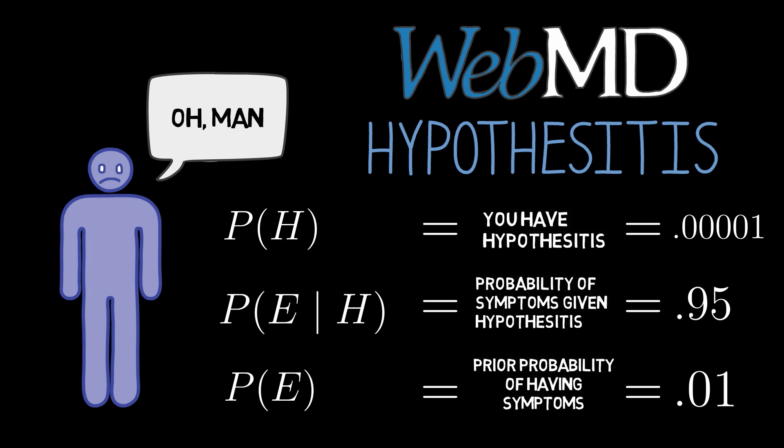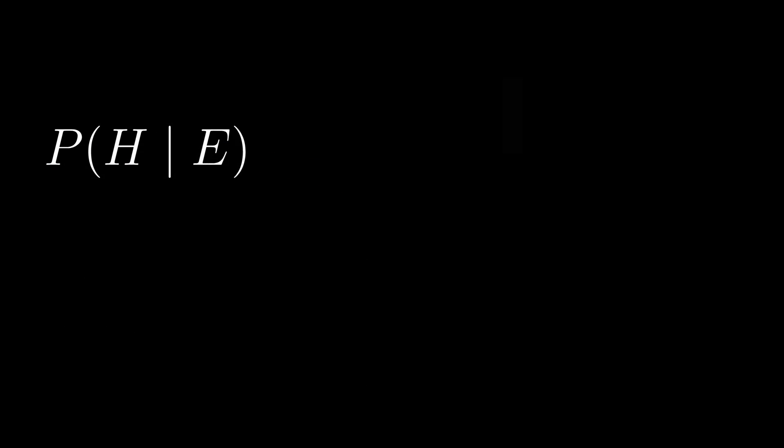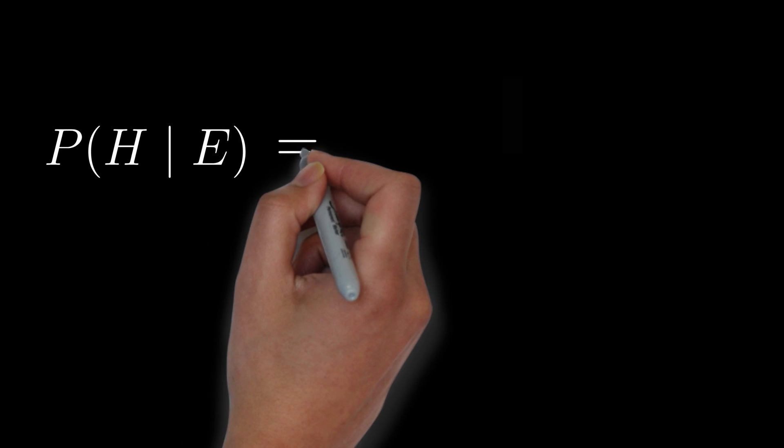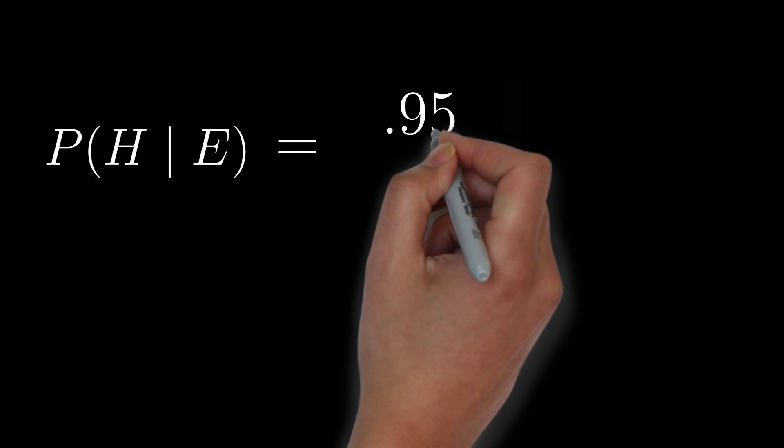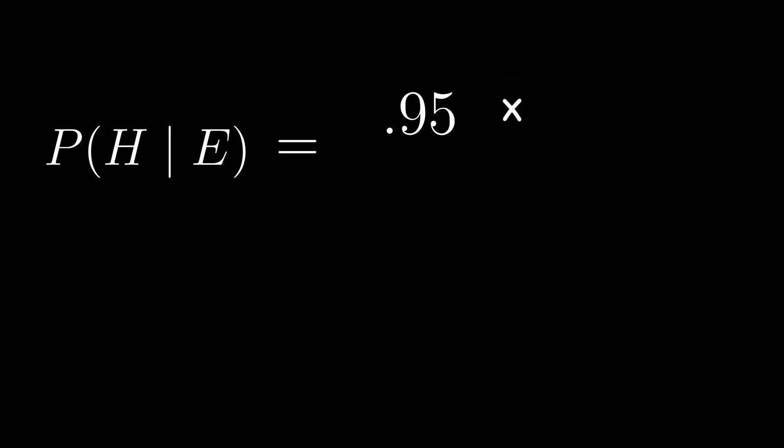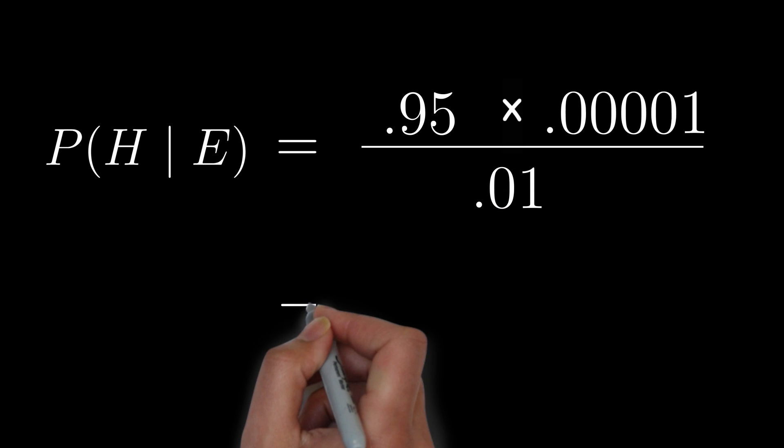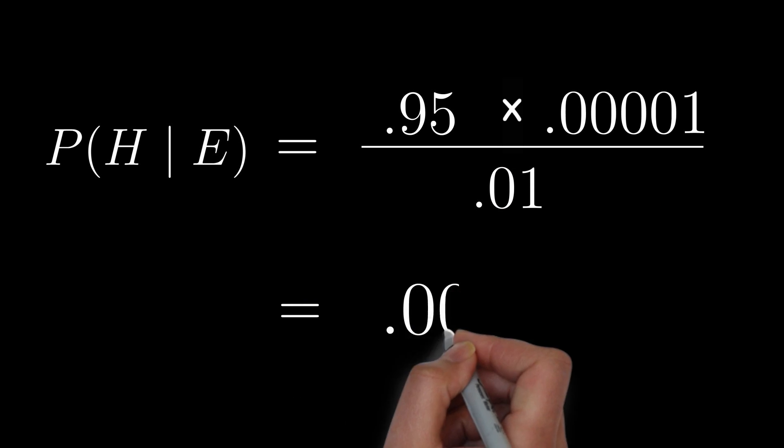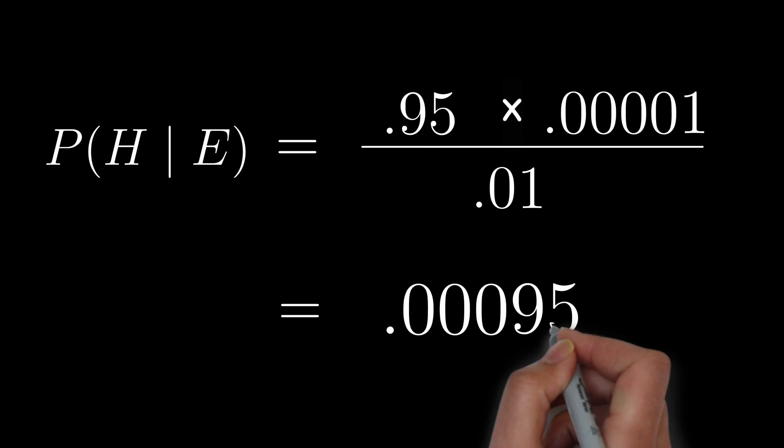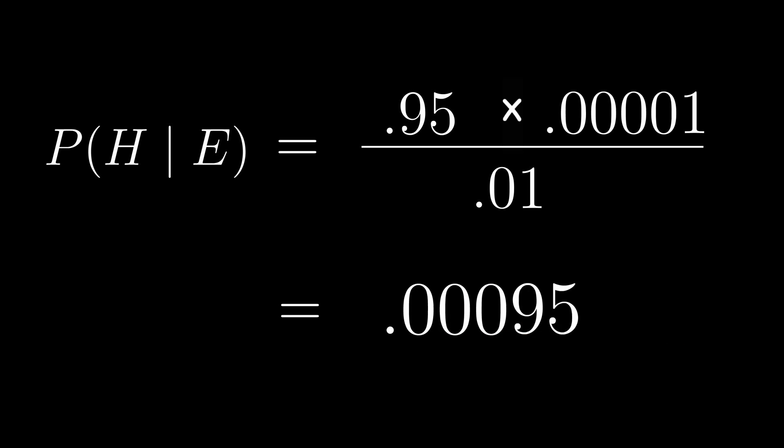At last, you know everything that you need to know in order to figure out the probability that you have hypothesitis given your symptoms. Bayes' theorem tells you that P of hypothesitis given symptoms equals P of symptoms given hypothesitis times P of hypothesitis divided by P of symptoms. In other words, P of hypothesitis given symptoms equals 0.00095, or a little less than 1 in 1,000.